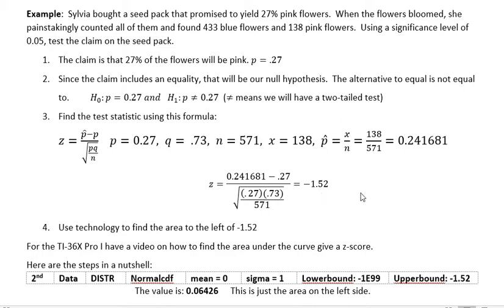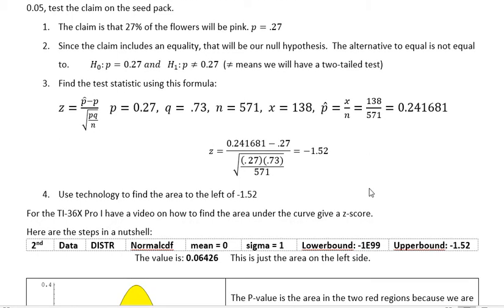Now, you're going to use technology, whether it's your calculator or StatCrunch or some program online. For the TI-36X Pro, I have a video on how to find the area in the curve given a z-score, which is what we're doing here. And these are the steps: second function data, distribution, normal CDF. Your mean is 0, sigma 1, lower bound, and upper bound. And then you get this value of 0.06426.